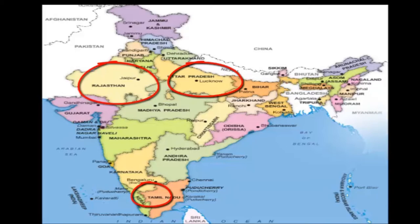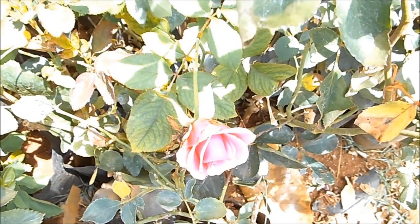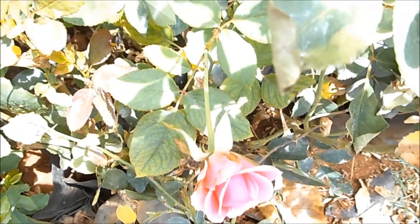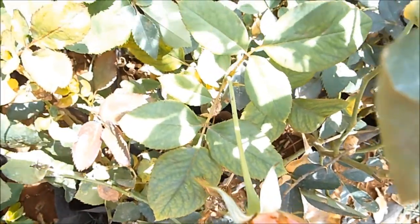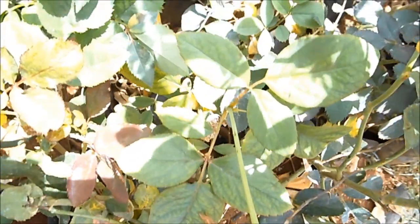A few districts in Tamil Nadu including the famous rose garden in Ooty, Bangalore, Hosur, Howrah in West Bengal, Delhi, and Pune in Maharashtra also have significant commercial rose cultivation.